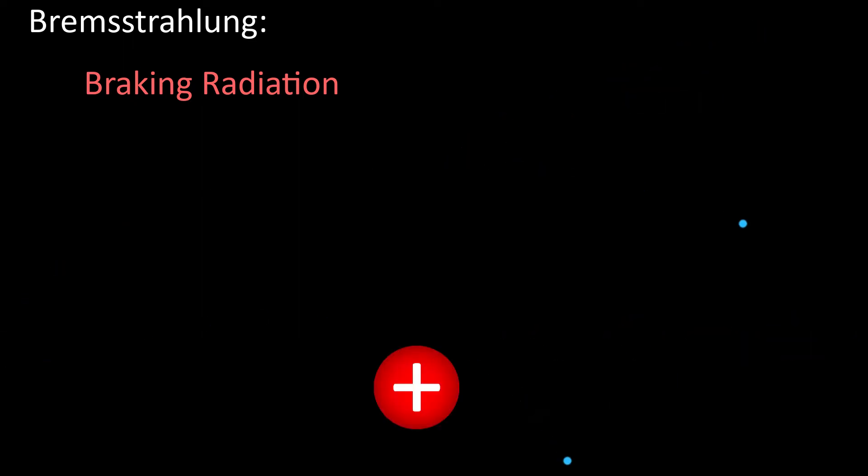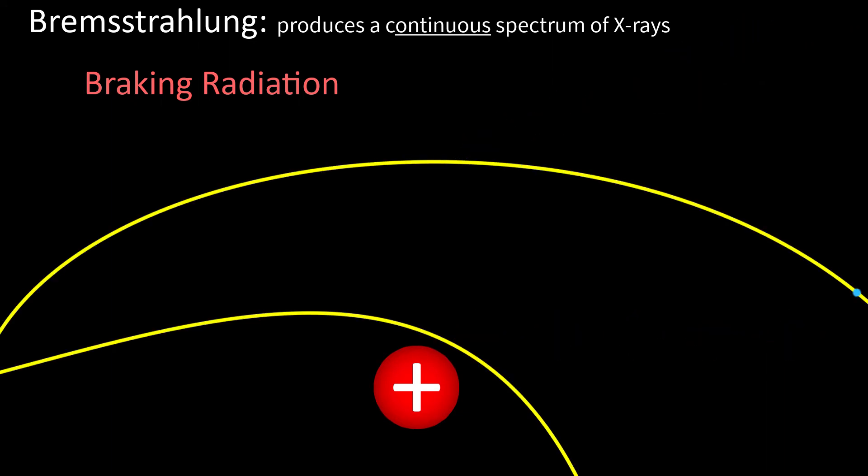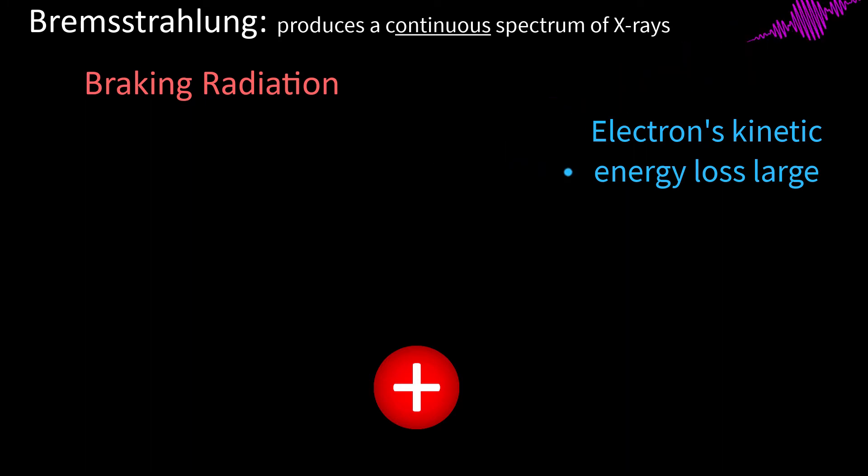Electrons passing close to the nucleus of an atom, in this case in the glass end of the cathode ray tube, are slowed down rapidly by their attraction to the positive charge. The kinetic energy lost by the electron is converted to the energy of an X-ray photon.